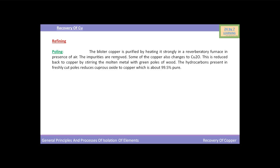During pooling, impurities are either removed as volatile oxides or converted into a sludge. Some of the copper also changes to cuprous oxide. This is reduced back to copper by stirring the molten metal with green poles of wood. The hydrocarbons present in the freshly cut poles reduce cuprous oxide to copper which is about 99.5% pure.